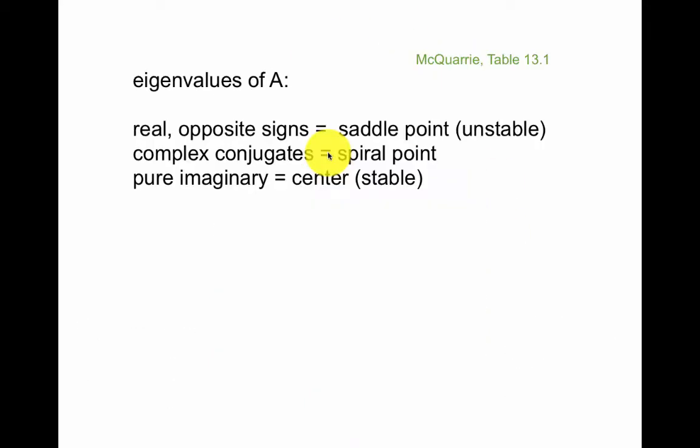In general, you can classify your system by the eigenvalues of the matrix A on the right hand side. So the real and opposite signs is a saddle point. Complex conjugate is a spiral point where it spirals in. And pure imaginary is a stable point. We'll talk more about that.